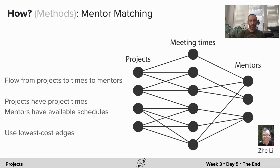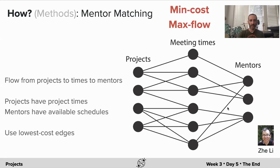How did we do it? Zhe Li formulated the problem as a min-cost max-flow problem, where you have a flow from projects to time slots to mentors. The projects have some available times designated by links. Mentors have some available schedules, again designated by links, and you can assign those edges different costs. The goal is to find a flow from projects to mentors that goes through the fewest number of links and makes sure that everybody is covered.